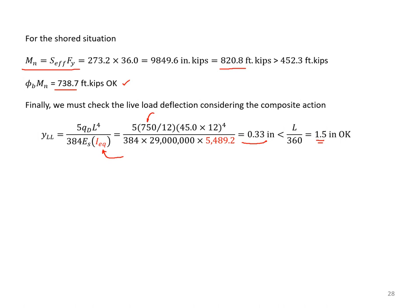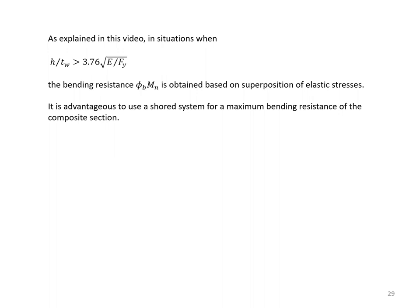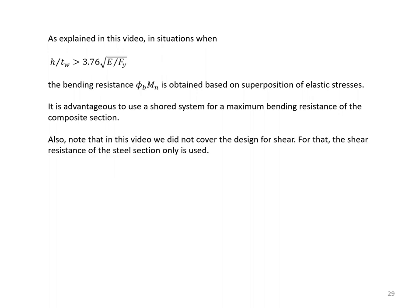As explained in this video, when H over TW exceeds 3.76 times the square root of E over Fy, the bending resistance phi-MN is obtained based on superposition of elastic stresses. It is advantageous to use a shored system for maximum bending resistance of the composite section. Note that shear design is not covered in this video — for shear, the resistance of the steel section alone, without contribution from concrete, is used. Thank you for watching.